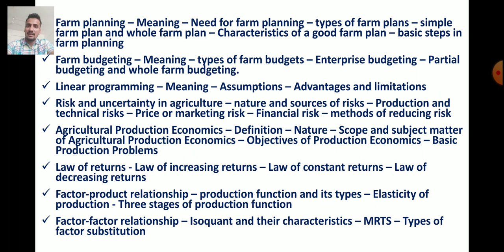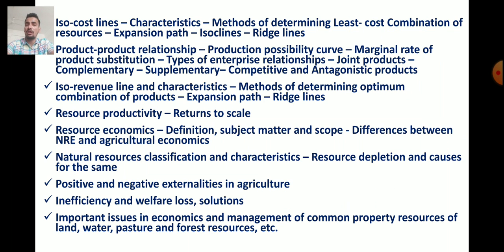Next is Factor-Factor Relationship: Isoquants and their different characteristics, what is MRTS (Marginal Rate of Technical Substitution), Types of Factor Substitution, what are Isocost Lines and their characteristics, and Methods of Determining Least Cost Combination of Resources — including Expansion Path, Iso-clients, and Ridge Lines.